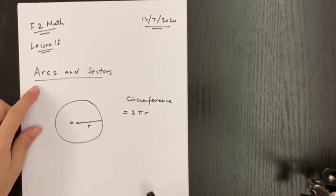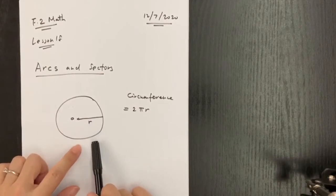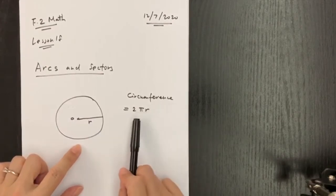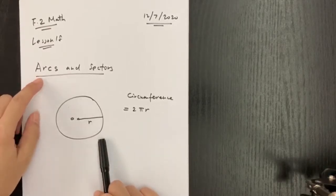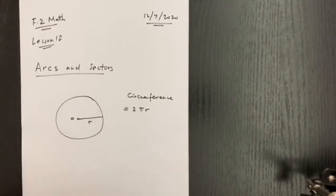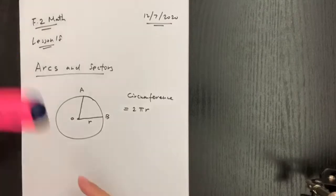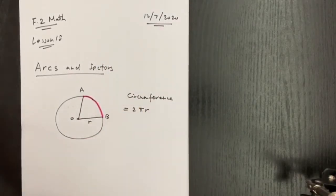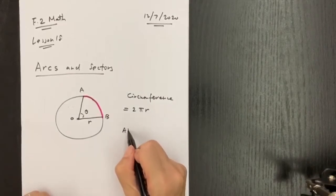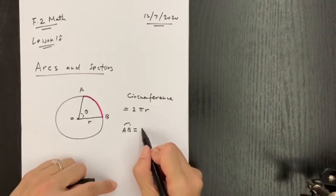Today's topic is about arcs and sectors. Here we have a circle with a center and a radius. The perimeter of a circle is called the circumference, and the formula to work out the circumference of a circle is 2πr, where r is the radius. Today's lesson looks at the arc, which is only part of the circle.